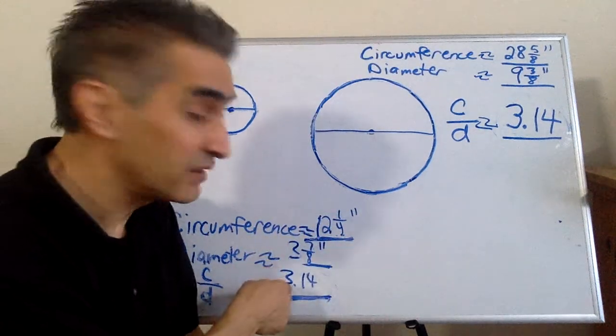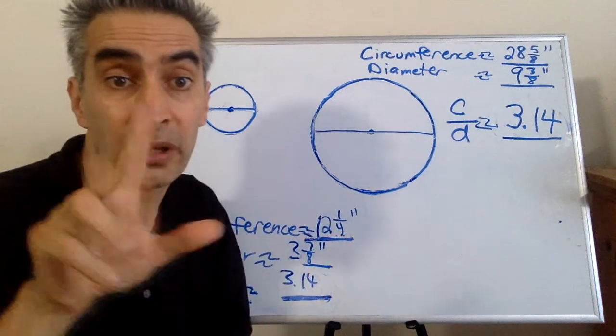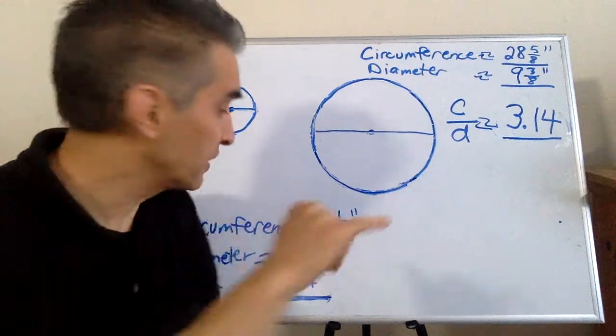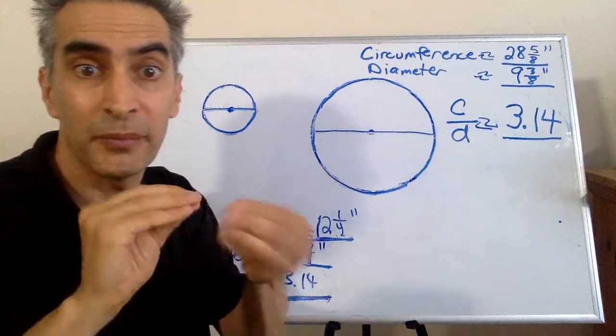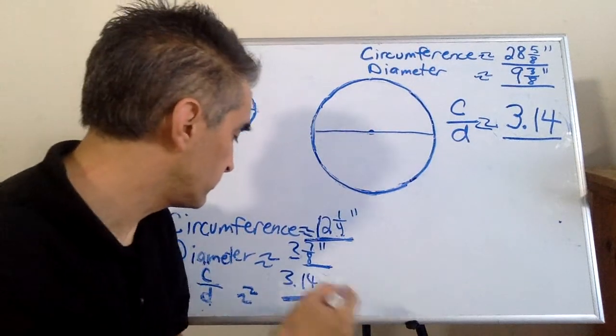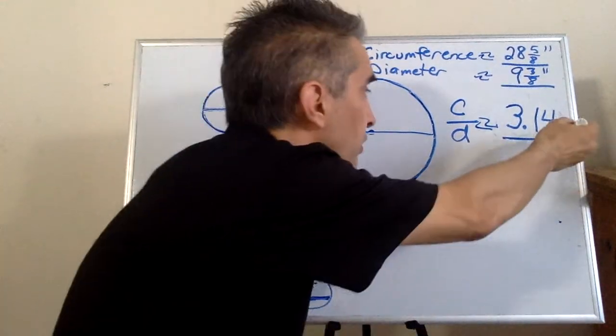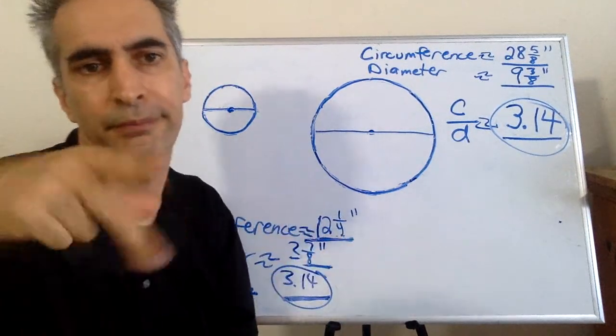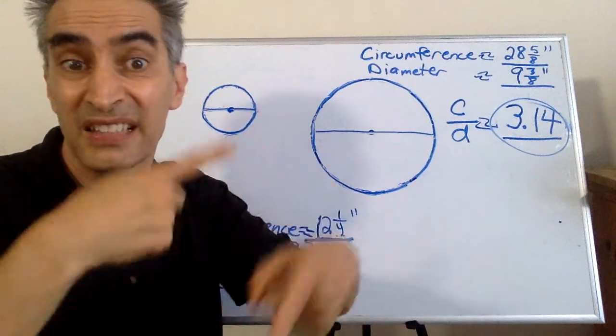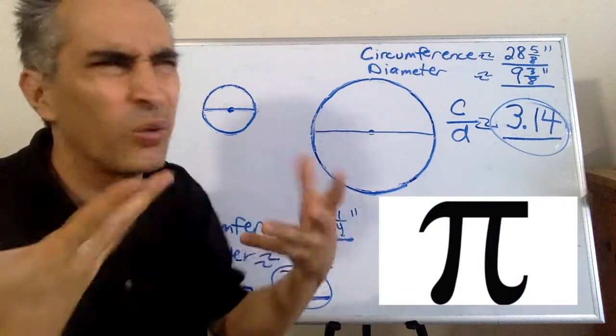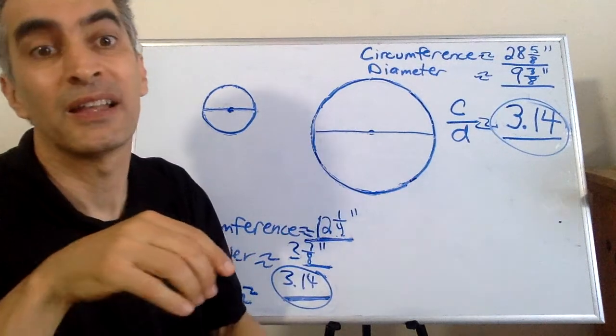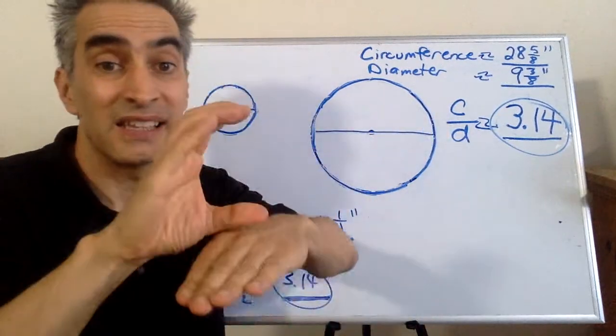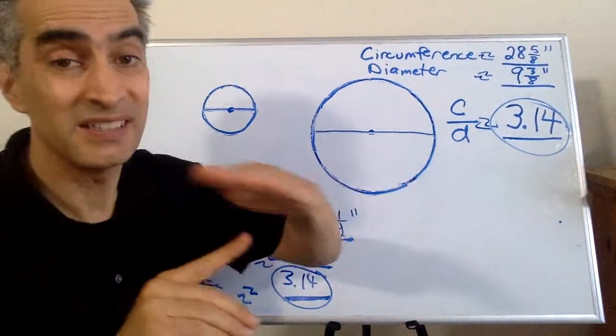Notice this number 3.14 and this number 3.14, it's the same number. What is this number? What is this number? It's pi. What is pi? That's a consistent ratio between the circumference and the diameter.